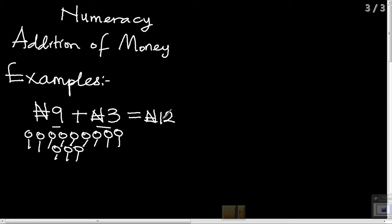Another example: 10 Kobo plus 5 Kobo. We count at 10 Kobo using small circles to represent it, plus 5 Kobo using small circles to represent it. Let's start counting: 1, 2, 3, 4, 5, 6, 7, 8, 9, 10. 5 Kobo: 1, 2, 3, 4, 5. Let's count together: 1, 2, 3, 4, 5, 6, 7, 8, 9, 10, 11, 12, 13, 14, 15. 10 Kobo plus 5 Kobo gives 15 Kobo.